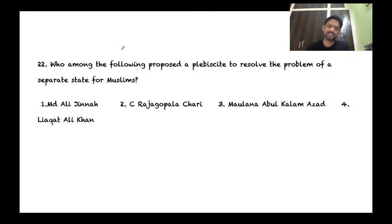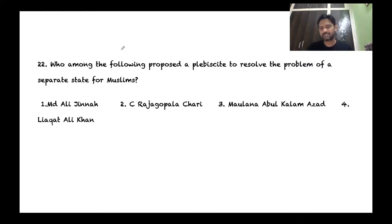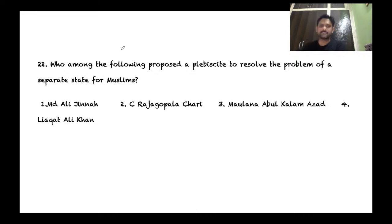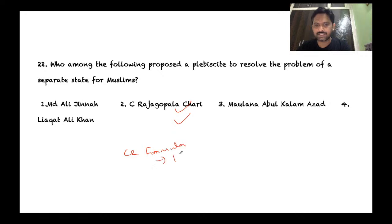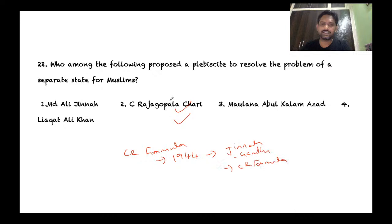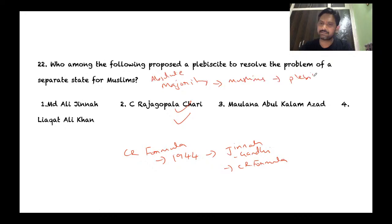Question 22: Who proposed a plebiscite to resolve the problem of a separate state for Muslims? There was a famous proposal by a prominent Congress leader to resolve the deadlock between the Congress and the Muslim League. The answer is C. Rajagopalachari, who suggested a scheme — later used by Mahatma Gandhi in talks with Jinnah — based on conducting a plebiscite in areas with an absolute Muslim majority.